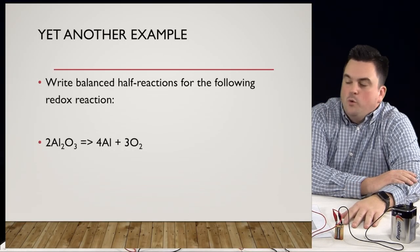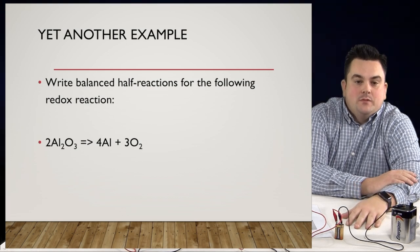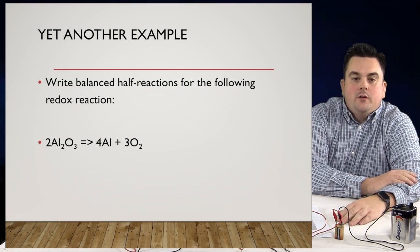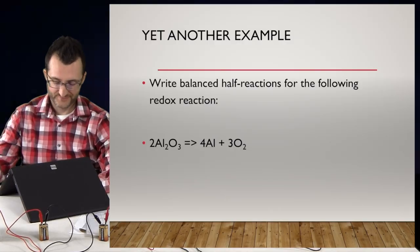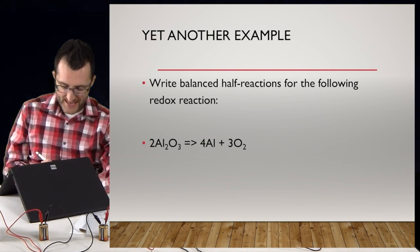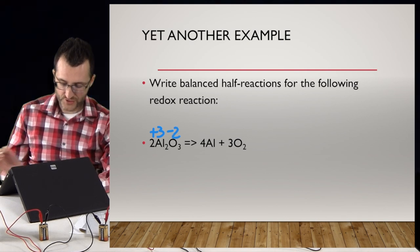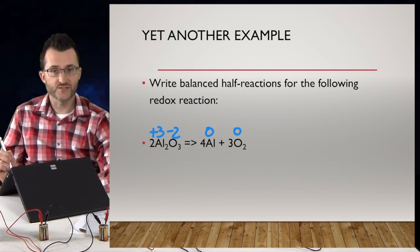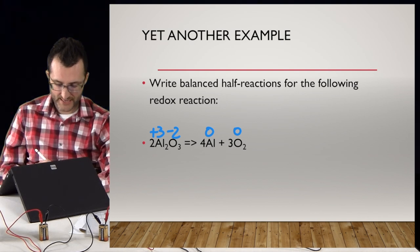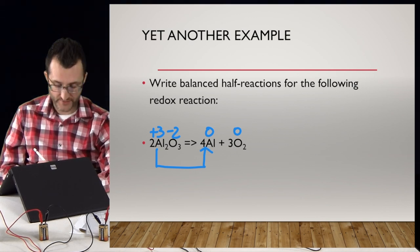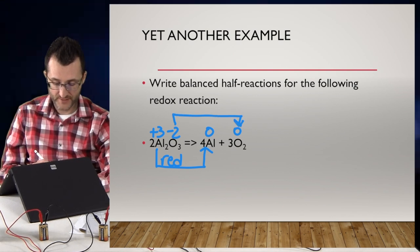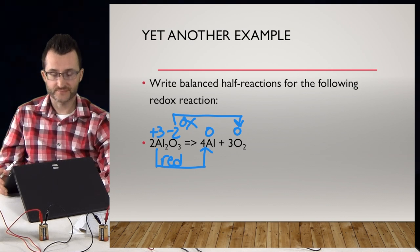Yet another example: write balanced half-reactions for the following redox reaction. Al is plus three and O is minus two in the compound. On the other side, Al is zero and O (even as atomic oxygen) is zero as an element. Al is going from plus three to zero — going down, so that's reduction. O is going from negative two to zero — going up, that is oxidation.